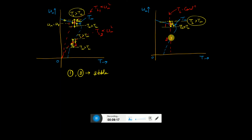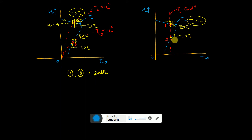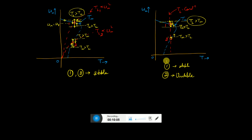Now let us take the case for the constant load. At position number 1, if we move forward, we find T_L is greater than T_m, bringing the motor back to the original position. If we decrease speed, T_m is greater than T_L, pushing it back — so position 1 is stable. At position number 2, if you make a positive delta change in speed, T_m is greater than T_L. This means if there is a disturbance increasing speed, motor torque exceeds load torque and speed keeps increasing — so position 2 is unstable. Graphically, we can determine whether a point is in a stable or unstable region.